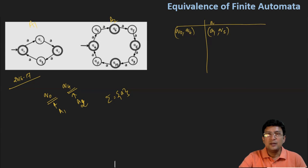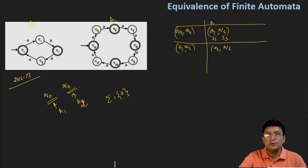Q1 is the intermediate state in the first automata and Q5 is the intermediate state in the second automata. So the next pair we need to take is Q1 and Q5. Q1 on taking A moves to Q2, and Q5 on taking A moves to Q6. Q2 is a final state and Q6 is also a final state.